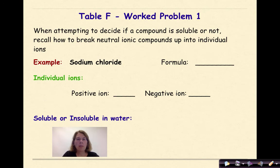Let's go through and look at some examples. When attempting to decide if a compound is soluble or not, in other words, will it dissolve, recall how to break neutral ionic compounds up into individual ions. So let's start with something pretty easy. Example here is sodium chloride. So if I look at sodium chloride, I know the positive ion is going to be Na+1, and my negative ion is going to be Cl-1. And because the +1 and the -1 cancel each other out, my formula here is going to be NaCl.